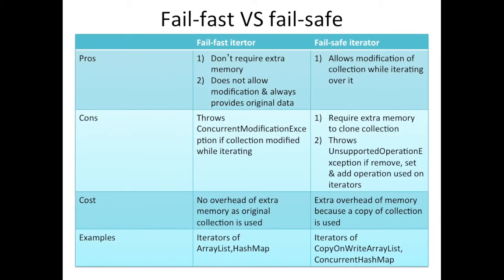Let's distinguish between fail-fast and fail-safe iterators. The good thing about a fail-fast iterator is that it does not require any extra memory, it does not allow modification, and always provides original data. In the case of a fail-safe iterator, it allows modification of the collection while iterating over it, but the data you get may be old — whatever was in the snapshot.